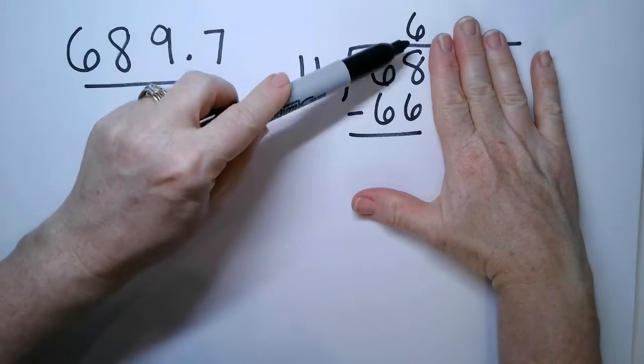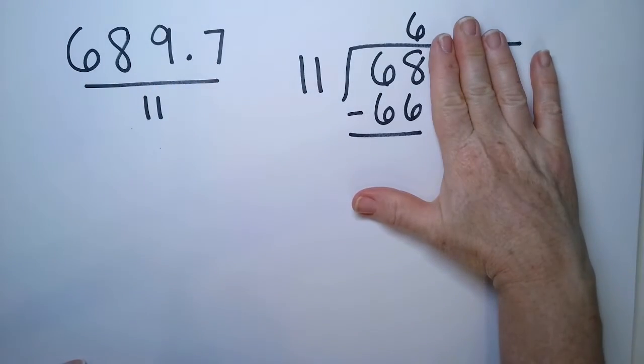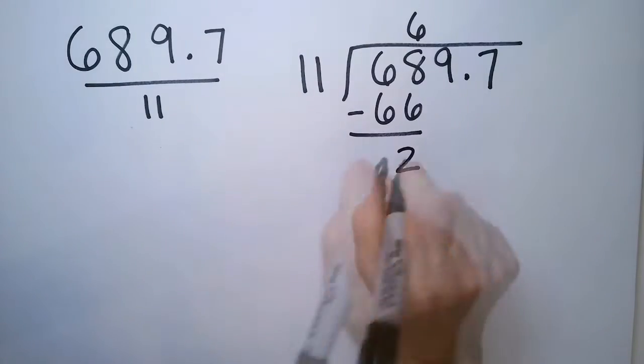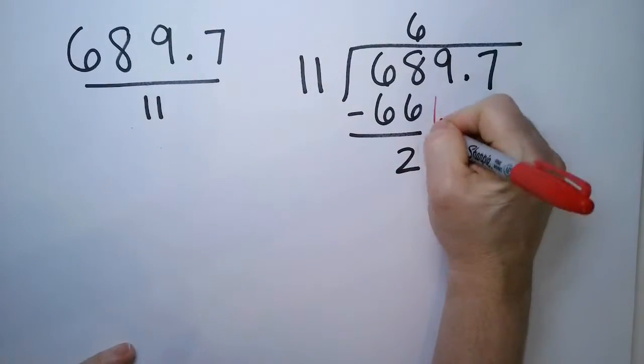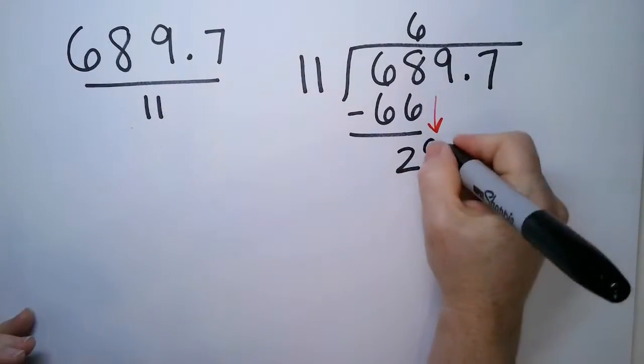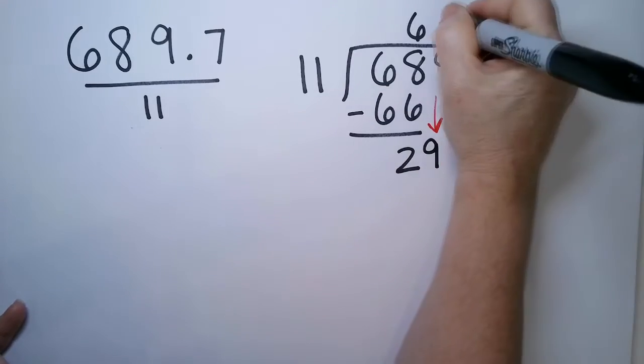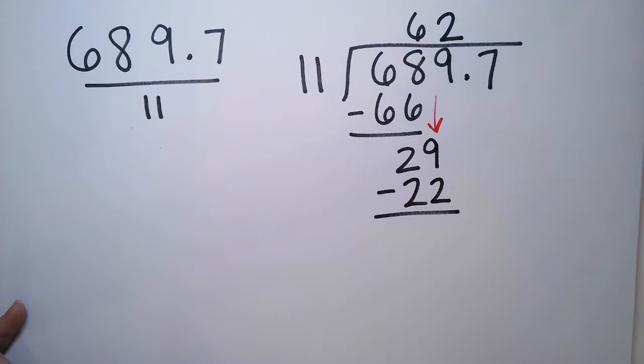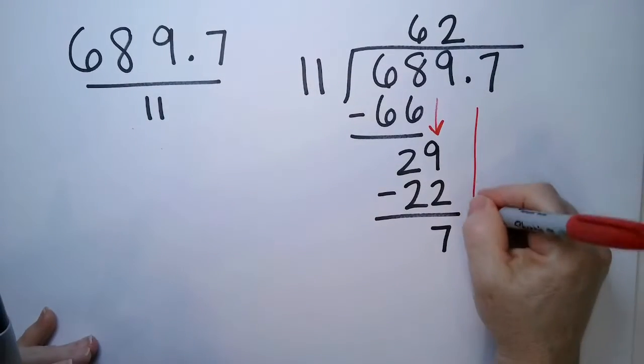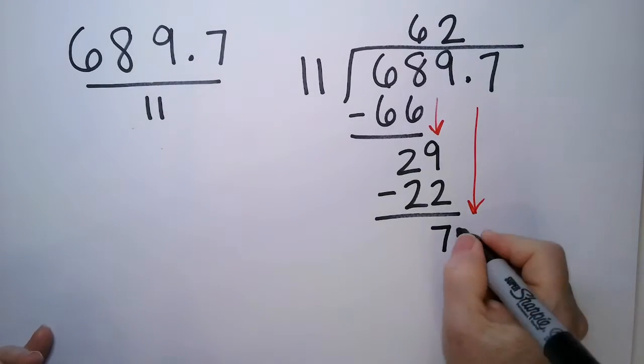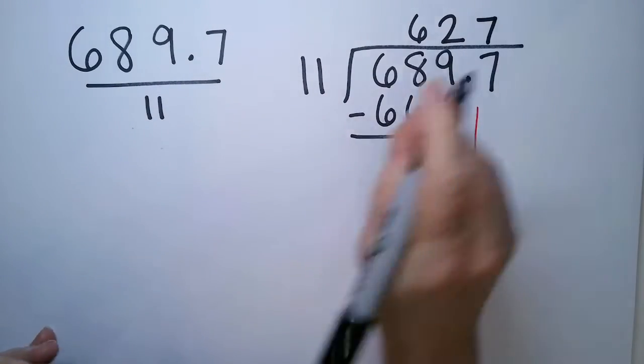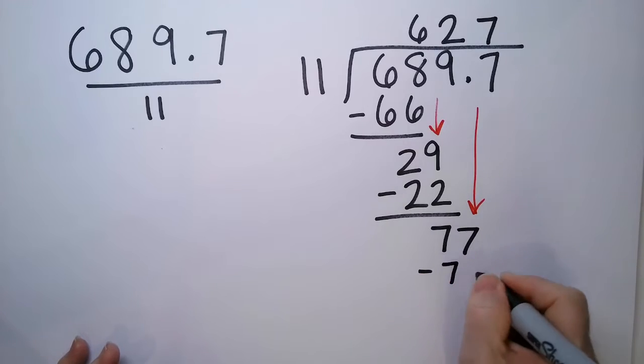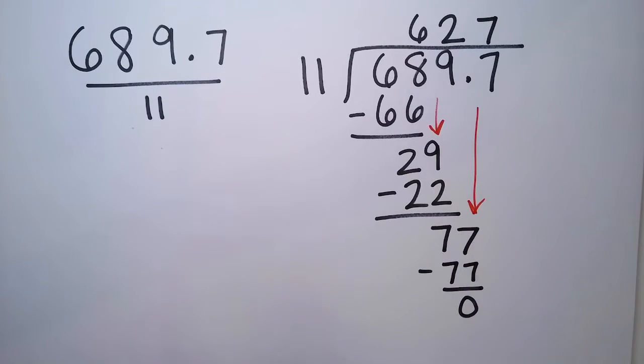We put the six right above the ones there. So I have a 2, and then we're going to drop the 9. So I have a 29. 11 goes into 29 two times without going over, so that is going to equal 22. Take the difference, that's a 7, and then we're going to drop that second 7 down here. 11 goes into 77 seven times, and we have no remainder.